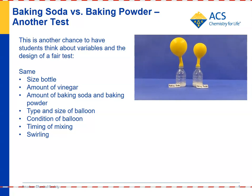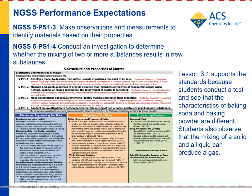For the Next Generation Science Standards, 5-PS1-3 — make observations and measurements to identify materials based on their properties — and 5-PS1-4 — conduct an investigation to determine whether the mixing of two or more substances results in a new substance. This lesson supports both of these standards because students mix substances and can identify the materials based on the amount of gas that's produced.